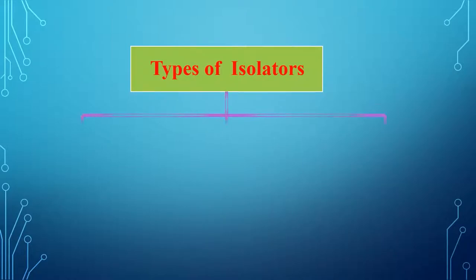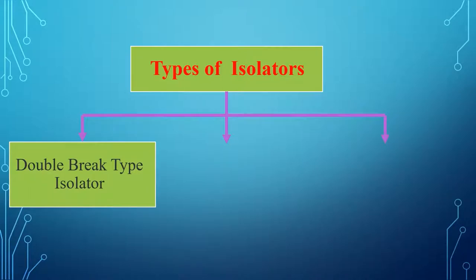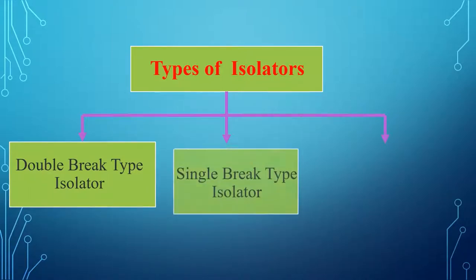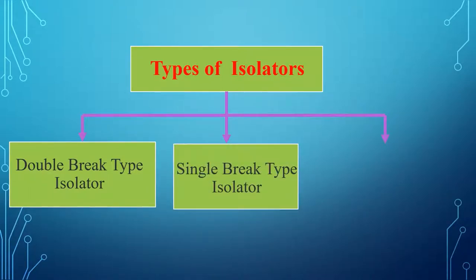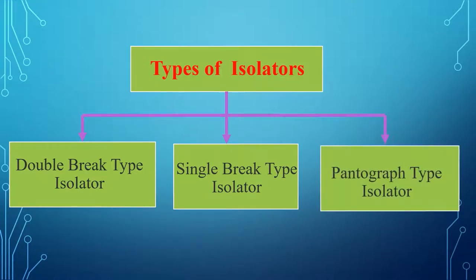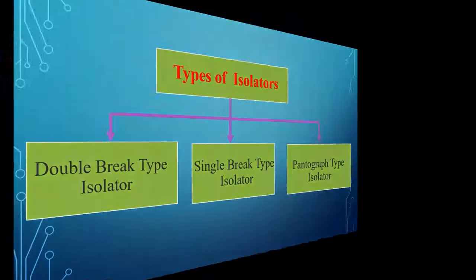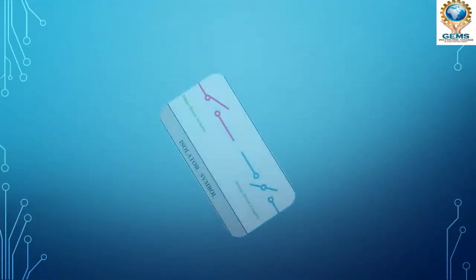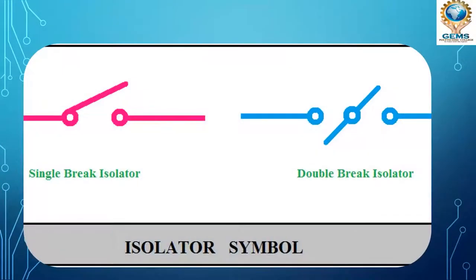Isolators are classified into three types: first, the double break isolator; second, the single break isolator; and third, the pantograph isolator. Here you can see the symbolic representation of the single break isolator and the double break isolator.